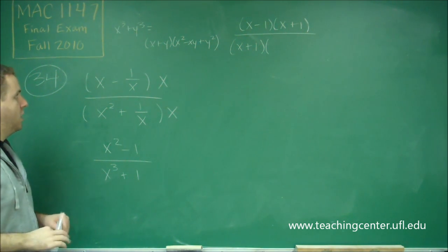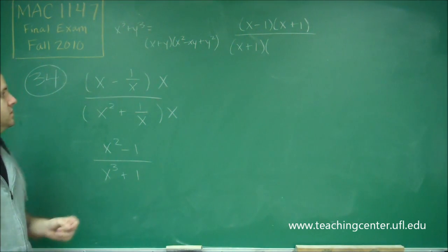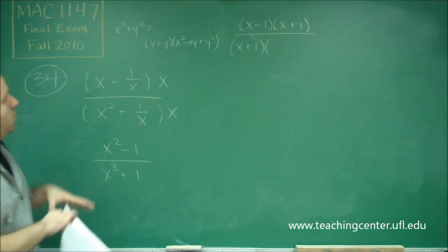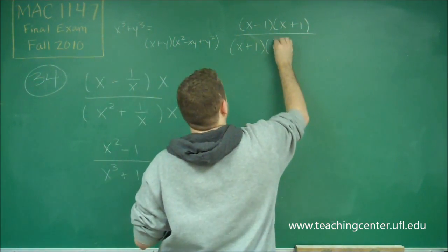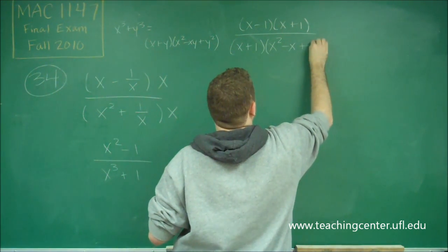We just need to apply that here where our x is x and our y is 1. So we have x plus 1 times x squared minus x plus 1.